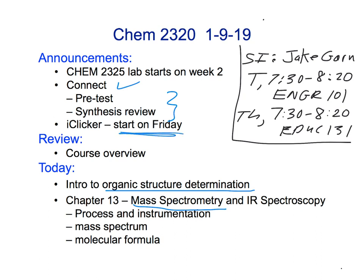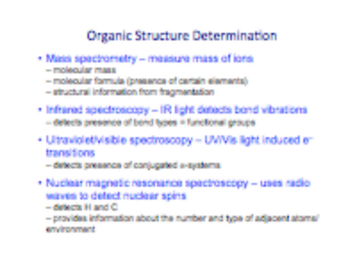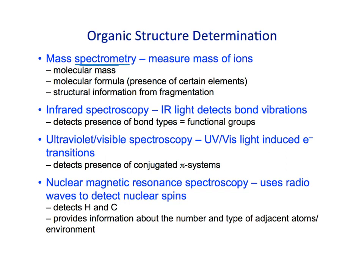The first iClicker question will be on Friday. Now, out of these four techniques, one of them is the odd one out, and that's the one we're going to talk about first: mass spectrometry. All of the other methods are called spectroscopy — techniques that involve the absorption of electromagnetic radiation by a molecule. Mass spectrometry uses an electron beam, so it doesn't use light. That's a little bit different.